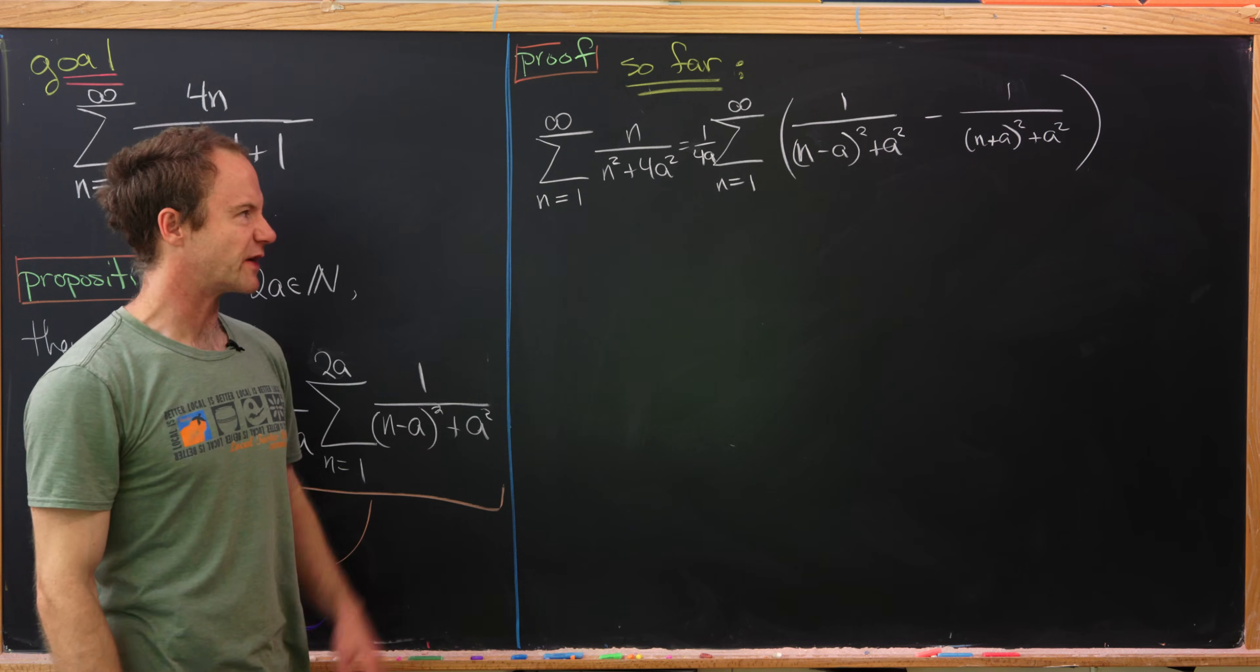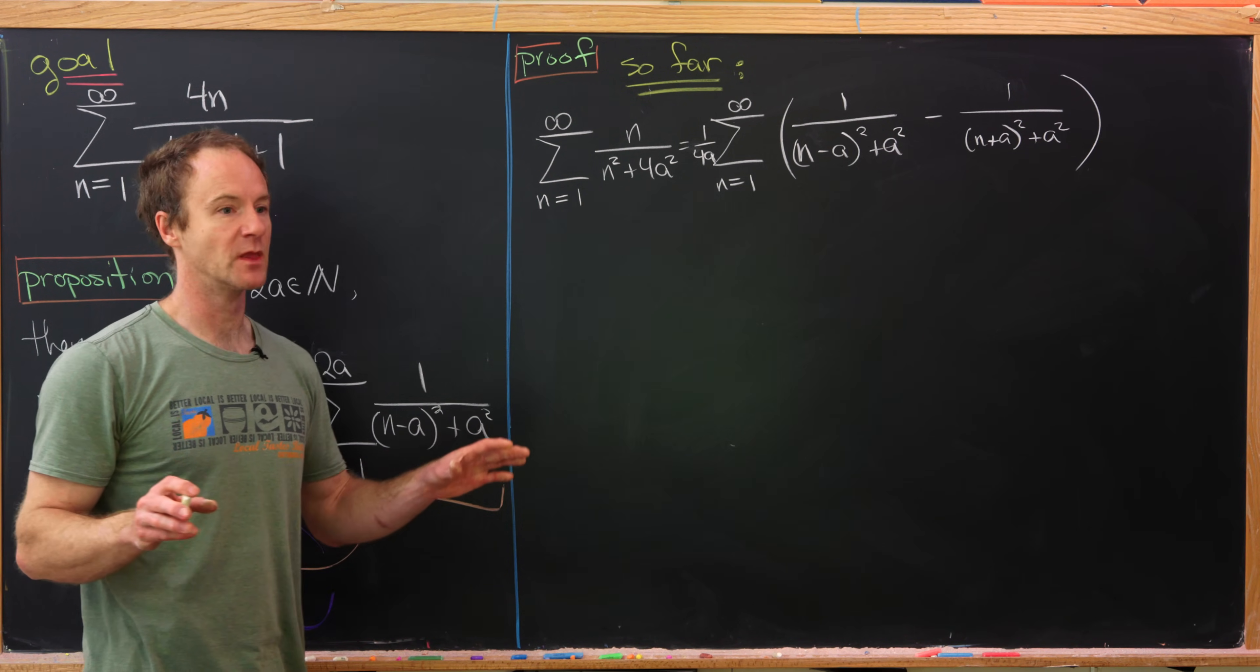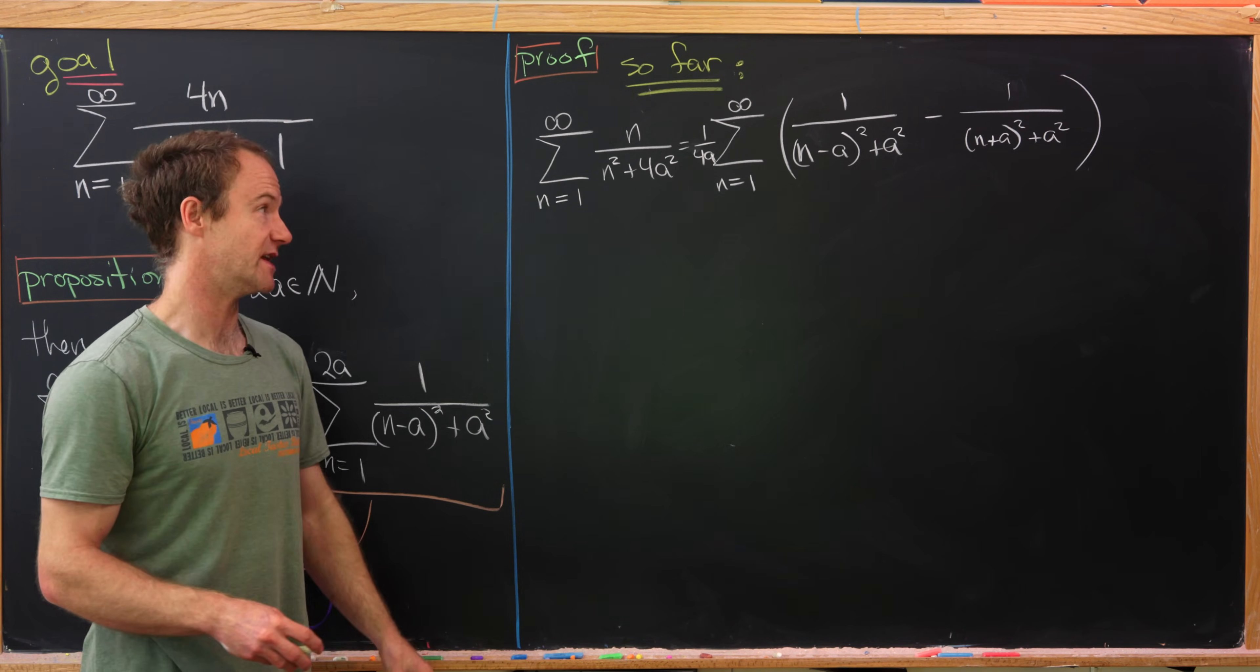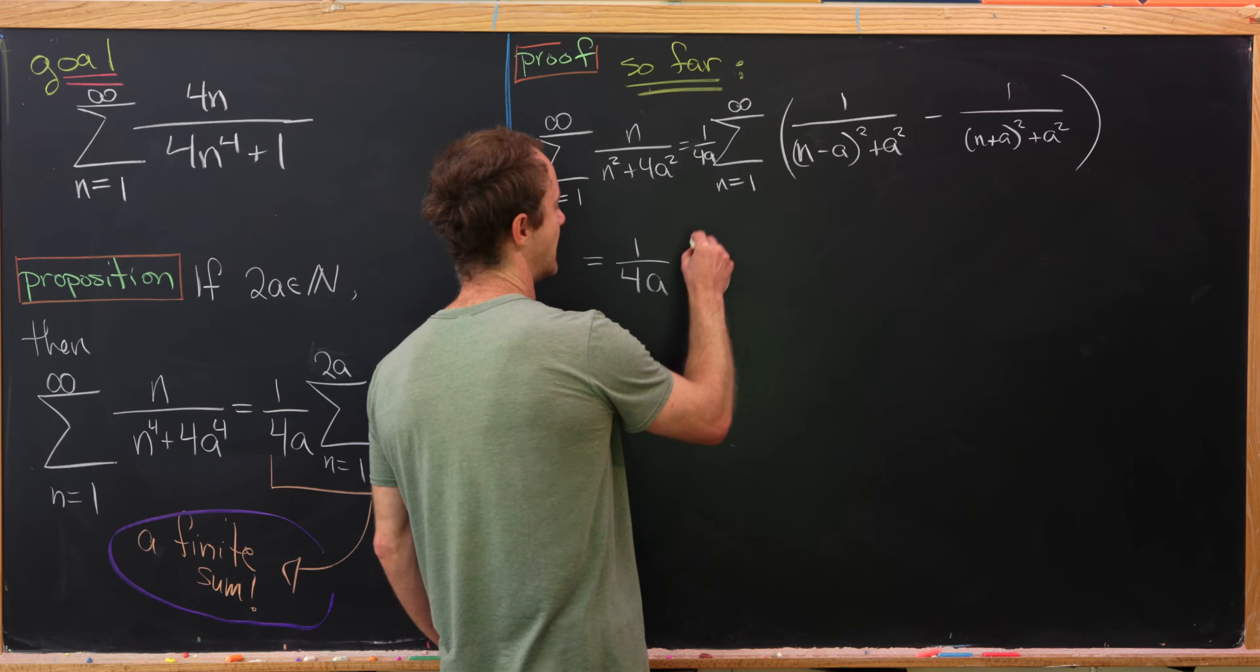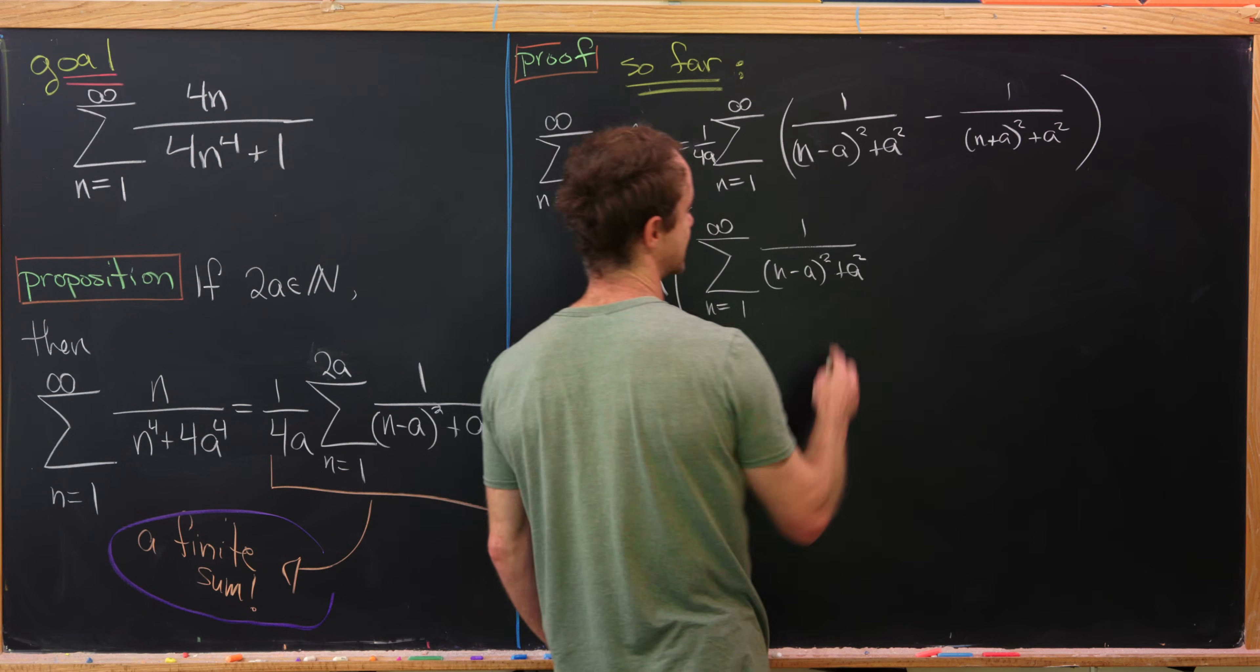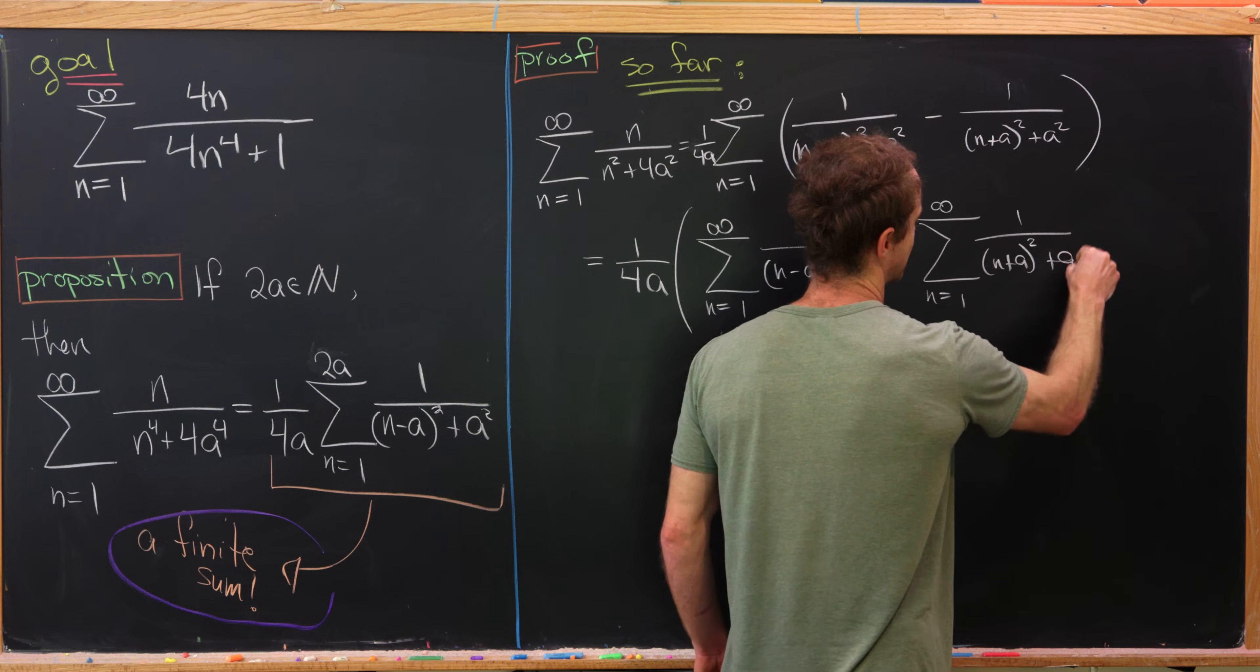So here we've got just a simple rewriting of what we had on the previous board. And now what we'll do is take this and split it into two sums. You might say, well, hold up. How do we know we can do that? Well, notice that each of these series converge absolutely. You could see that maybe by doing a limit comparison test with 1 over n squared. So let's do that. So I've got this 1 over 4a, and then that's in front of the whole thing. And now I have the sum as n goes from 1 to infinity of 1 over n minus a quantity squared plus a squared. And then let's see. Minus the sum as n goes from 1 to infinity of 1 over n plus a all squared plus a squared.